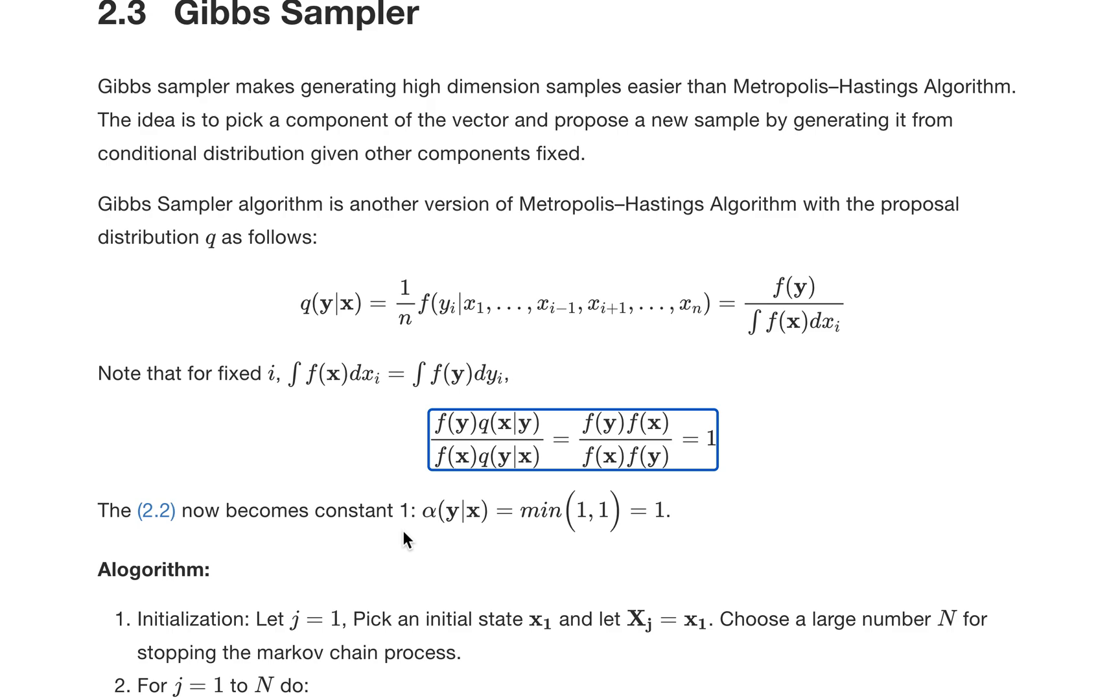So the rejection and acceptance probability is always one, which means that we always accept the new proposal.